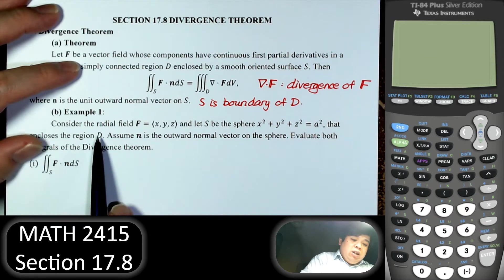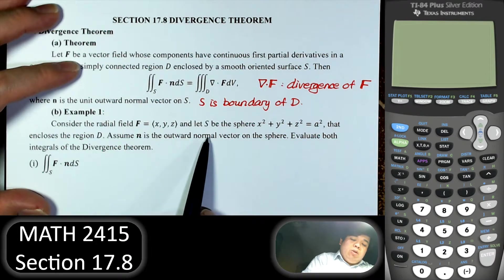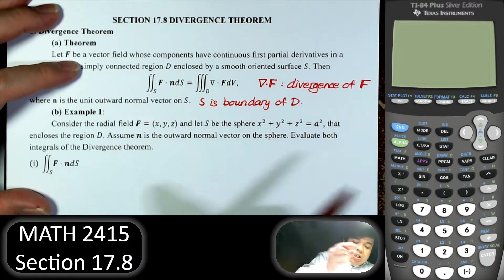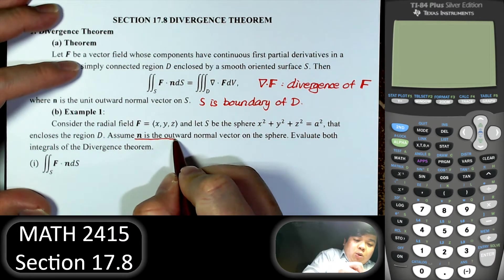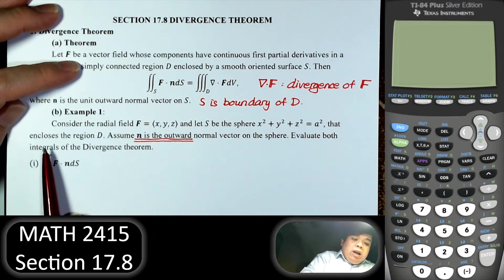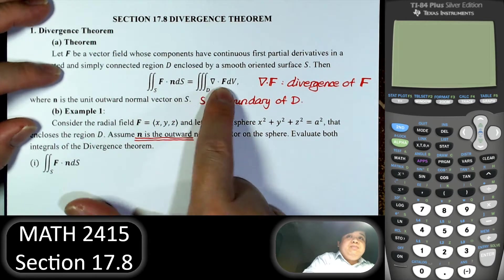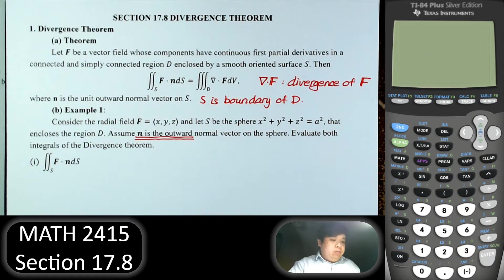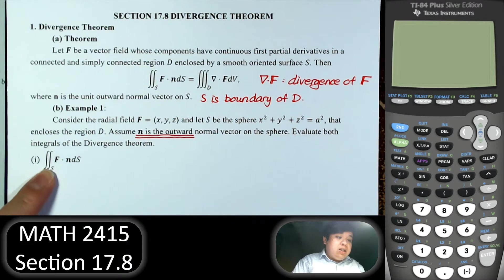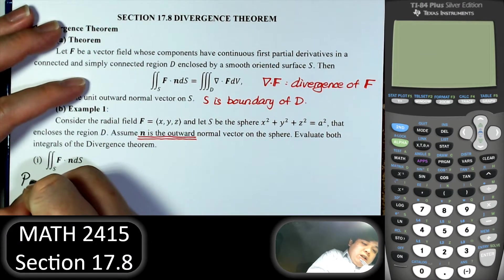Assume that N is our outward normal vector. We're asked to evaluate both the surface integral and the triple integral of the divergence — first we'll do the left-hand side, then the right-hand side. They're supposed to be equal. On the left-hand side, first thing we see is the surface integral.